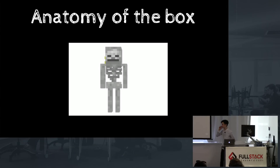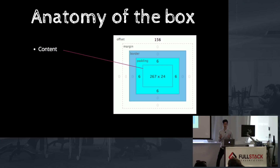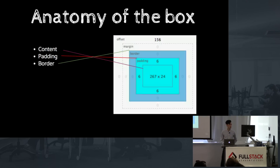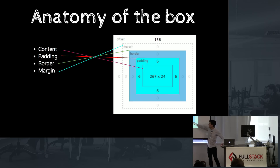Let's talk about the anatomy of the box. A box is actually made up of smaller boxes. The first thing is the content — that's what you've actually got in your div element, your span, whatever. That determines the content box size by default. Next is the padding — the space between whatever you have inside your div and the border. The border is set to zero by default, and that is the space between the padding and the margin. When you have a background image or background color, it is displayed on the content box, the border box, and the padding box, but not on the margin.